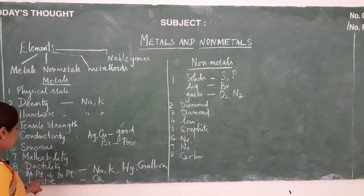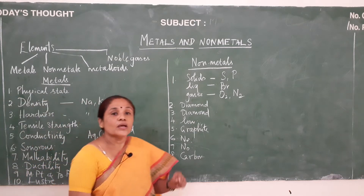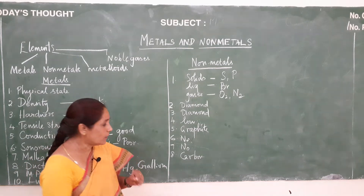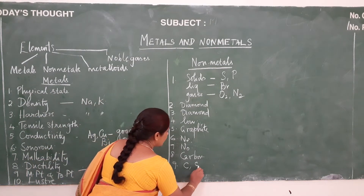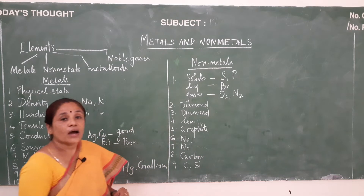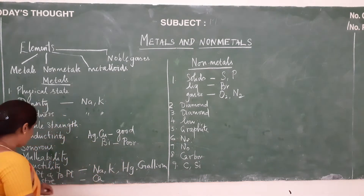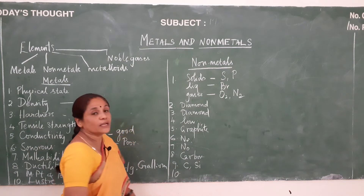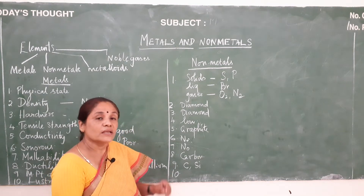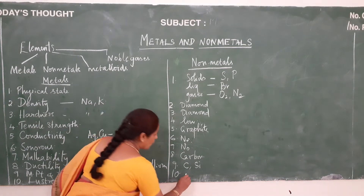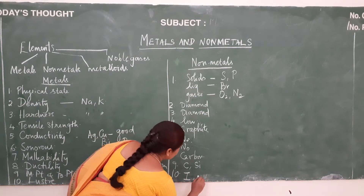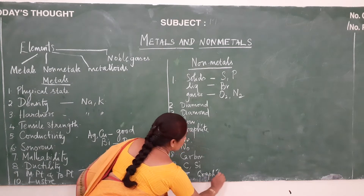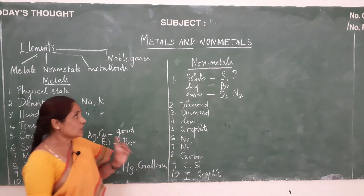The next property is melting point and boiling point. Nonmetals generally have low melting point and low boiling point. There is an exception: carbon and silicon have high melting point and boiling point. The last property is lustre — the shining property. Nonmetals lack the lustrous property, with an exception for iodine and graphite, which are lustrous in nature.